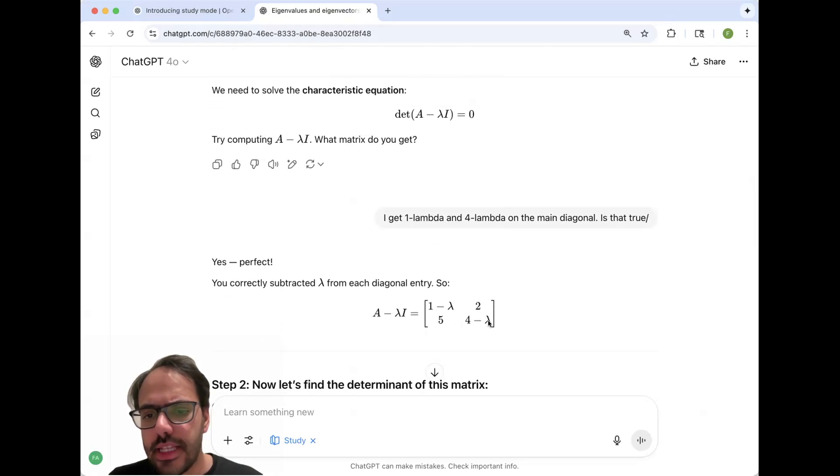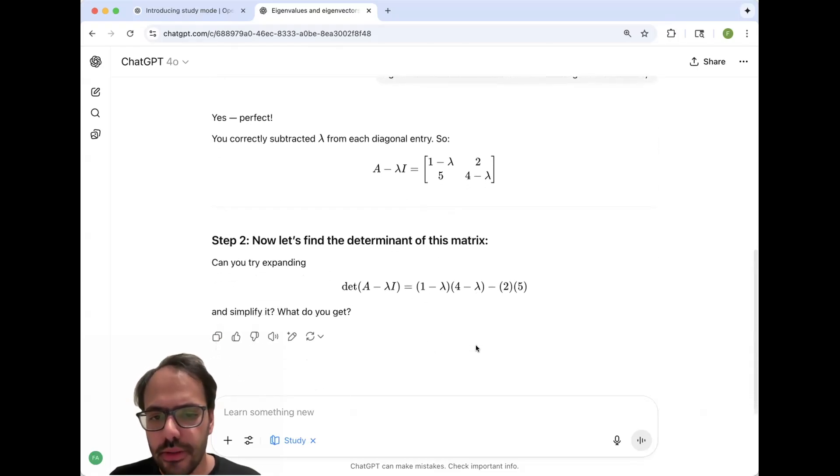And of course, now we have to find the determinant, which is correct here is the product of these two terms on the main diagonal. And then we subtract the product of these two off diagonal terms. So and now it asked us to simplify this and see what we get.